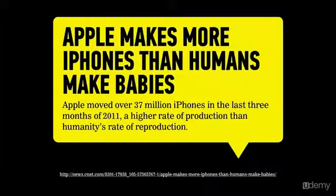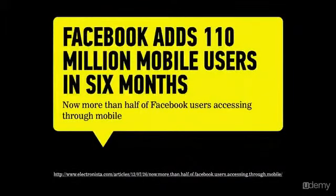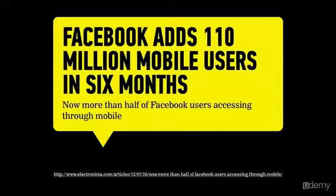It's absolutely sweeping not just developed nations but around the world. But it's not just about devices. Facebook added 110 million mobile users in six months, to the extent that more than half of Facebook users were accessing it through a mobile device. That means the primary way that people now interact with Facebook is from iPhones, Android devices, and other smartphones. Clearly that has a big impact for the way they need to allocate engineering resources and how seriously they need to take their app development.